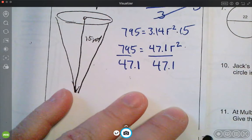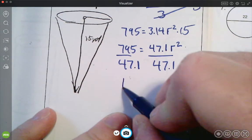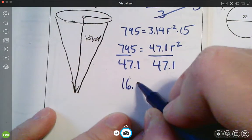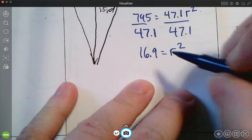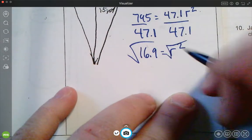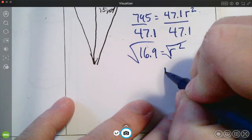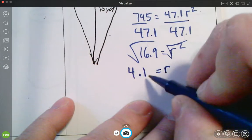And I'm left with 795. Sorry. 795 divided by 47.1. And I get 16.9 equals radius squared. So now I get the square root both sides. So in my calculator, I'm going to do 16.9 square root, and I get the radius here is equal to about 4.1 yards.